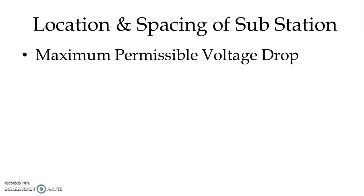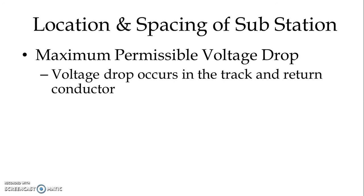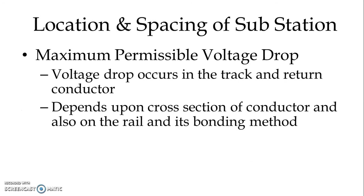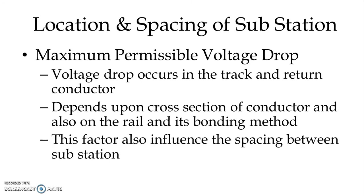Maximum permissible voltage drop: voltage drop occurs in the track and return conductor, and that depends upon the cross-section of the conductor and also on the rail and its bonding method. This factor also influences the spacing between substations.